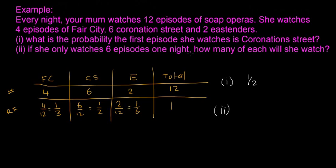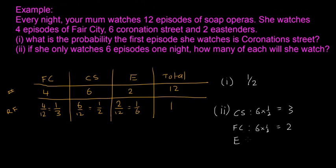Second one: if she only watches 6 episodes one night, how many of each will she watch? The idea is we multiply the relative frequency by the total amount. Carnation Street - generally half the episodes she watches are Carnation Street, and if she watches 6 episodes in one night, it's just 6 times a half, so she's probably going to watch 3 episodes of Carnation Street. Fair City - normally she watches 4 over 12 or one third, so that means 6 times one third, and she will probably watch 2 episodes of Fair City. East Enders - she generally watches 1 over 6, so it's just going to be 1 episode of East Enders. And 3 plus 2 plus 1 equals 6, so we can do a little check.